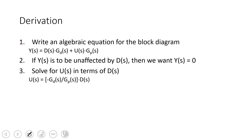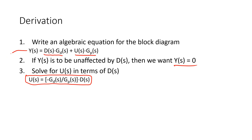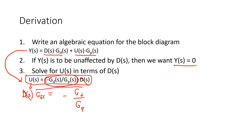To design the feedforward controller, we write an algebraic equation for the block diagram. The two paths are in parallel, so we add them together. If y is to be unaffected by the disturbance, then y equals zero, and we rearrange and solve for u. That gives us u equal to the disturbance times the feedforward controller transfer function. The feedforward controller is the negative of the disturbance transfer function divided by the process transfer function.